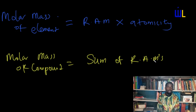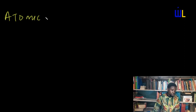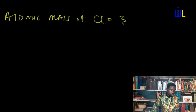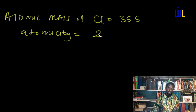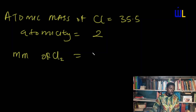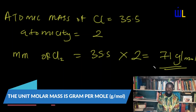Let's move on. Imagine I have a question: what is the molar mass of chlorine gas? First of all, I have to note that the atomic mass of chlorine is 35.5 and its atomicity is 2, because chlorine is a gas and all gaseous elements exist as diatomic molecules. So the molar mass of chlorine equals 35.5 multiplied by 2, which gives us 71 grams per mole. The unit of molar mass is grams per mole.